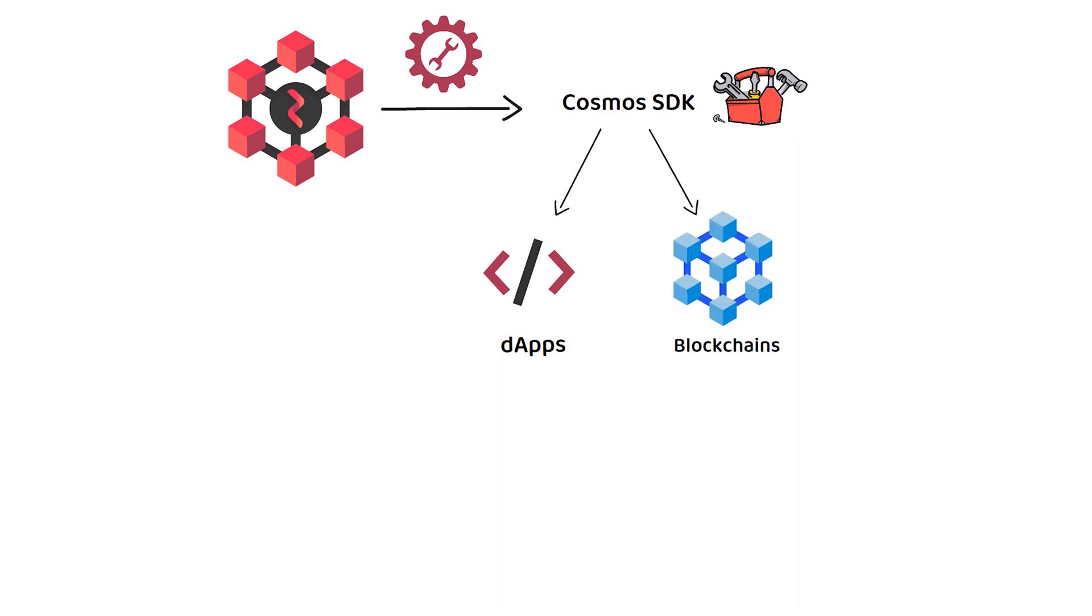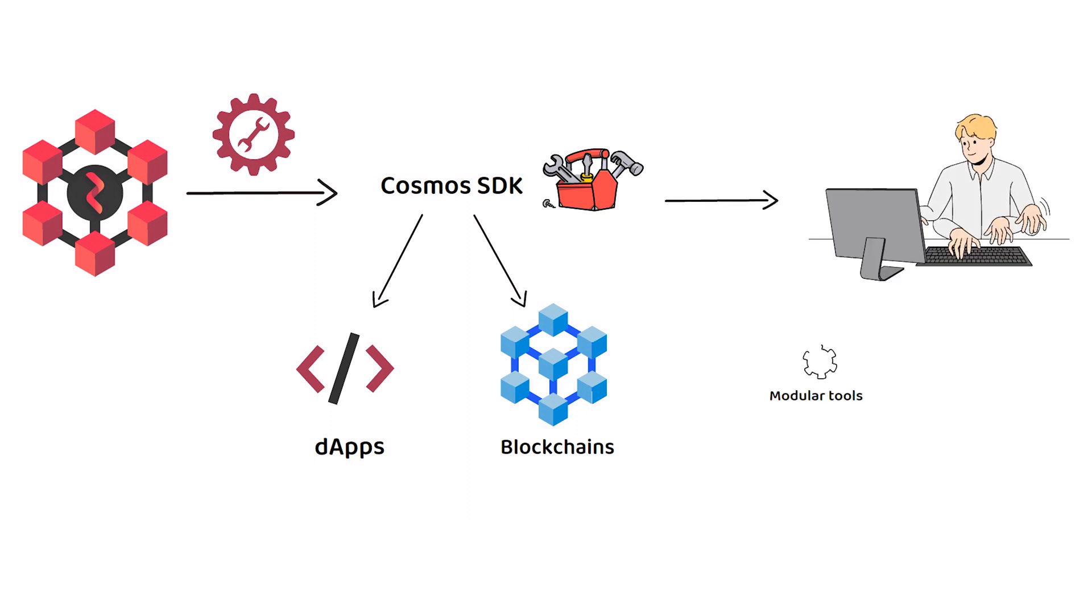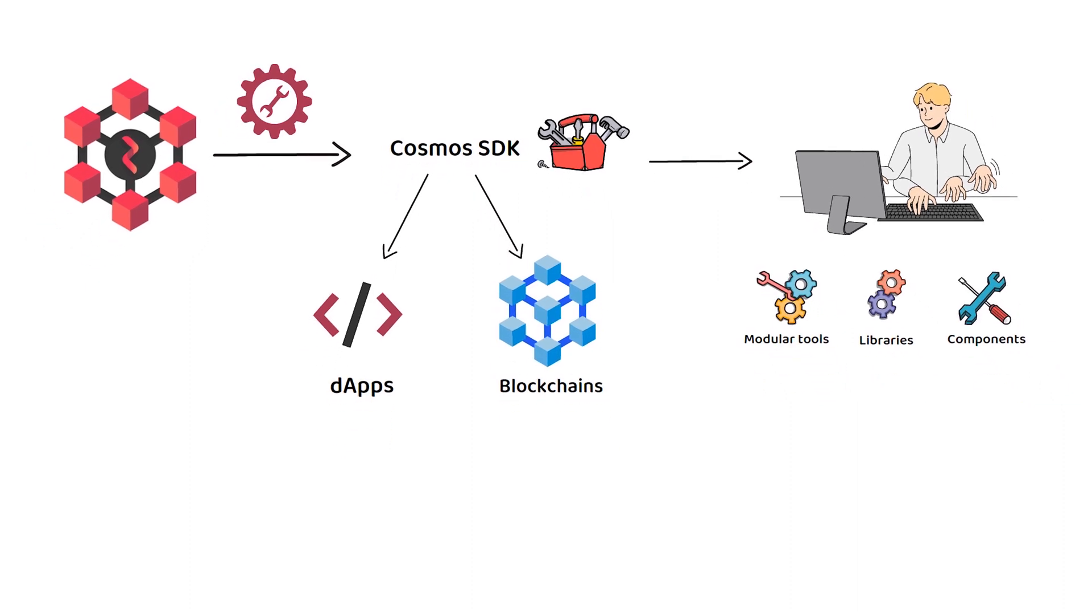The Cosmos Software Development Kit or SDK is a framework for building decentralized applications and custom blockchain networks. It aims to simplify the development process by providing developers with modular tools, libraries and pre-built components to streamline the blockchain creation process and ultimately ensure compatibility with other Cosmos SDK-built blockchains.